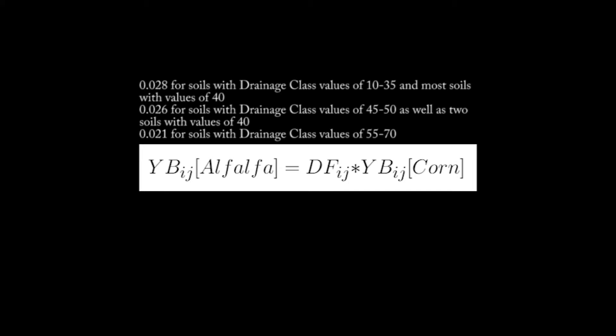0.026 for soils with drainage class values of 45 through 50 as well as two soils with values of 40, and 0.021 for soils with drainage class values of 55 through 70.